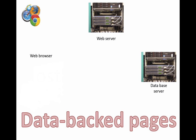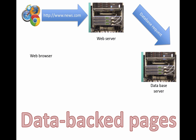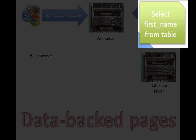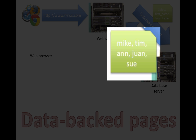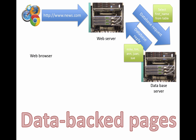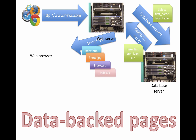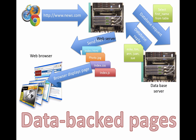What happens if we add another server to the mix? Let's say we have our web browser and web server, but now we add a database on the back end. The request comes from the client. The server, before it sends anything to the client, goes to the database and gets some information — a database request. It might say something like: select the first name from the table. It gets a list of names back — Mike, Tim, Ann, Juan, Sue — and the web server then has a variable that gets filled with data. Then the web server sends that file along with its usual things to the web browser, which displays it.